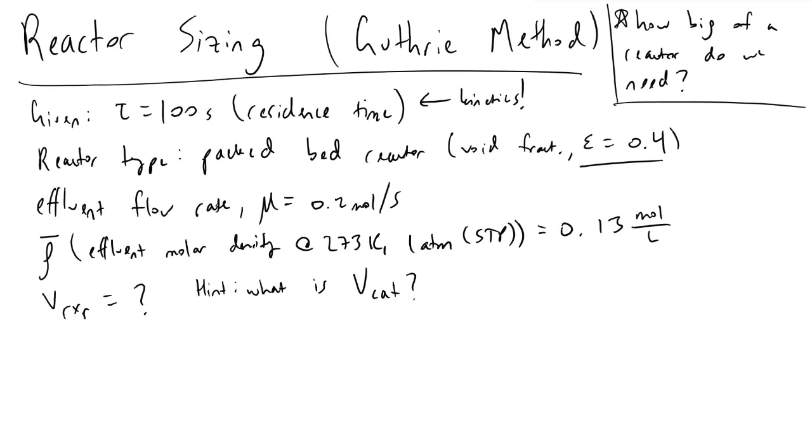We also know that we're going to want to make our effluent stream have a flow rate of 0.2 moles per second. This is the rate at which we want to make our product, so that is important information. And then we also know, based on tabulated data, that our effluent molar density is equivalent to 0.13 moles per liter. This is at standard temperature and pressure, 273 Kelvin and one atmosphere.